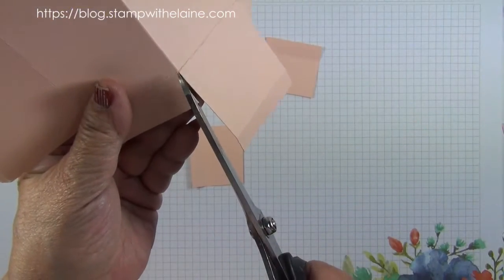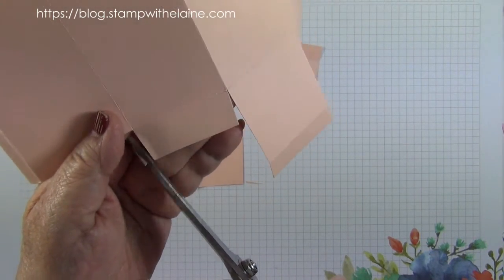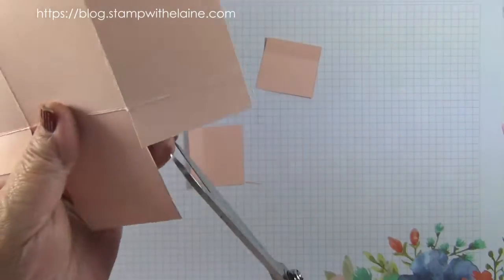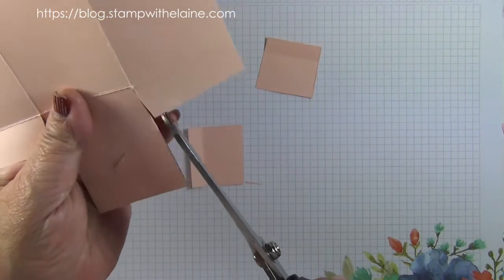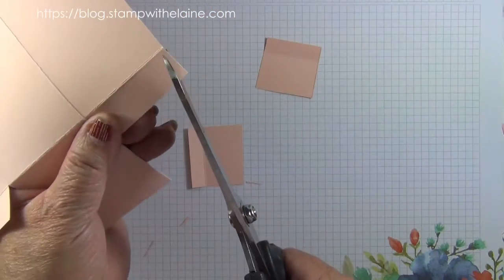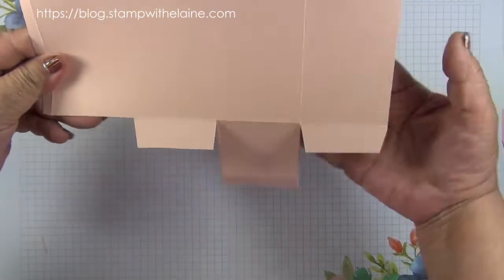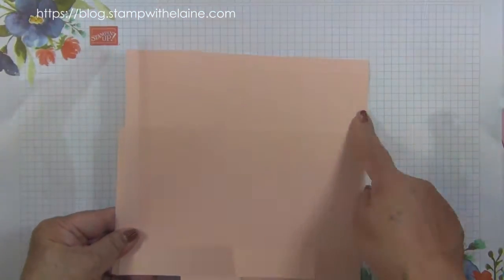Cut a little wedge in there as well, but not too much otherwise your box might not stay closed properly. So that's the bottom of your box done. Now we'll do the top.